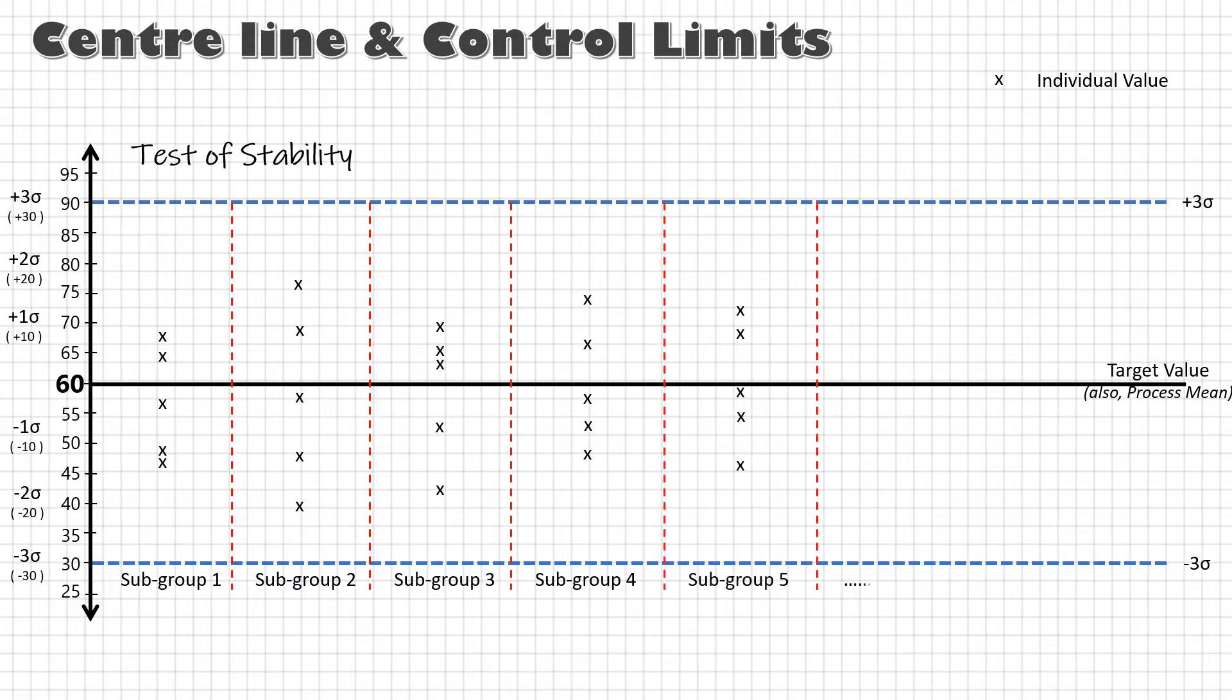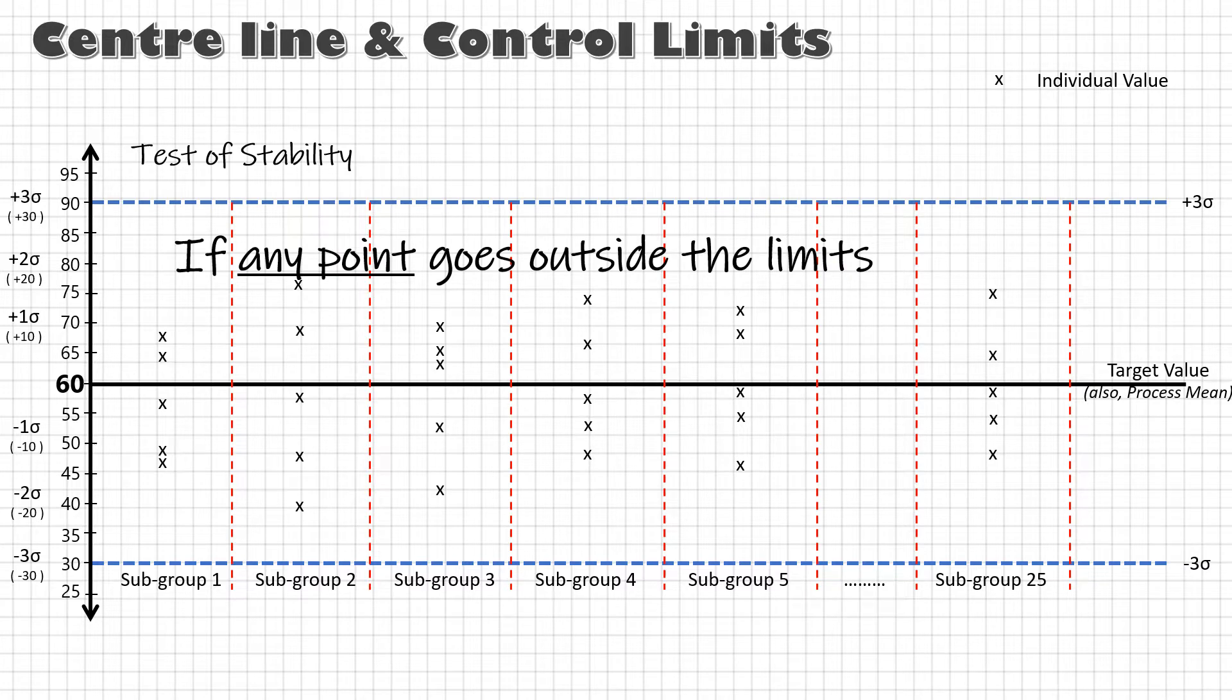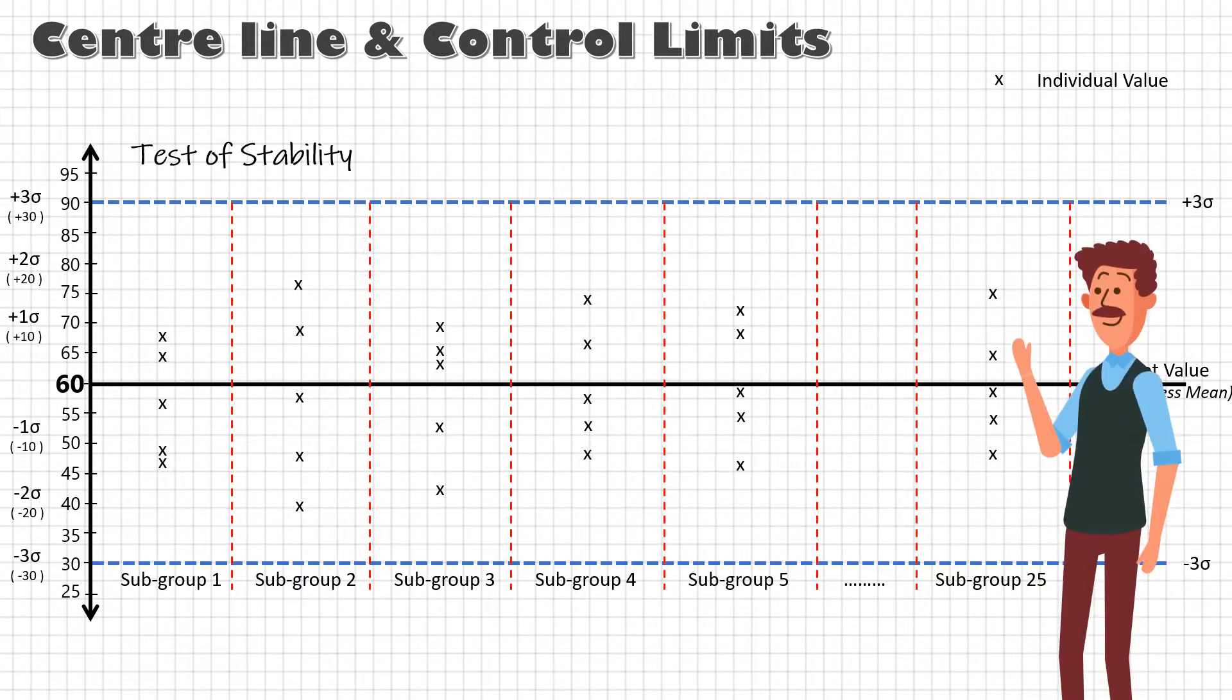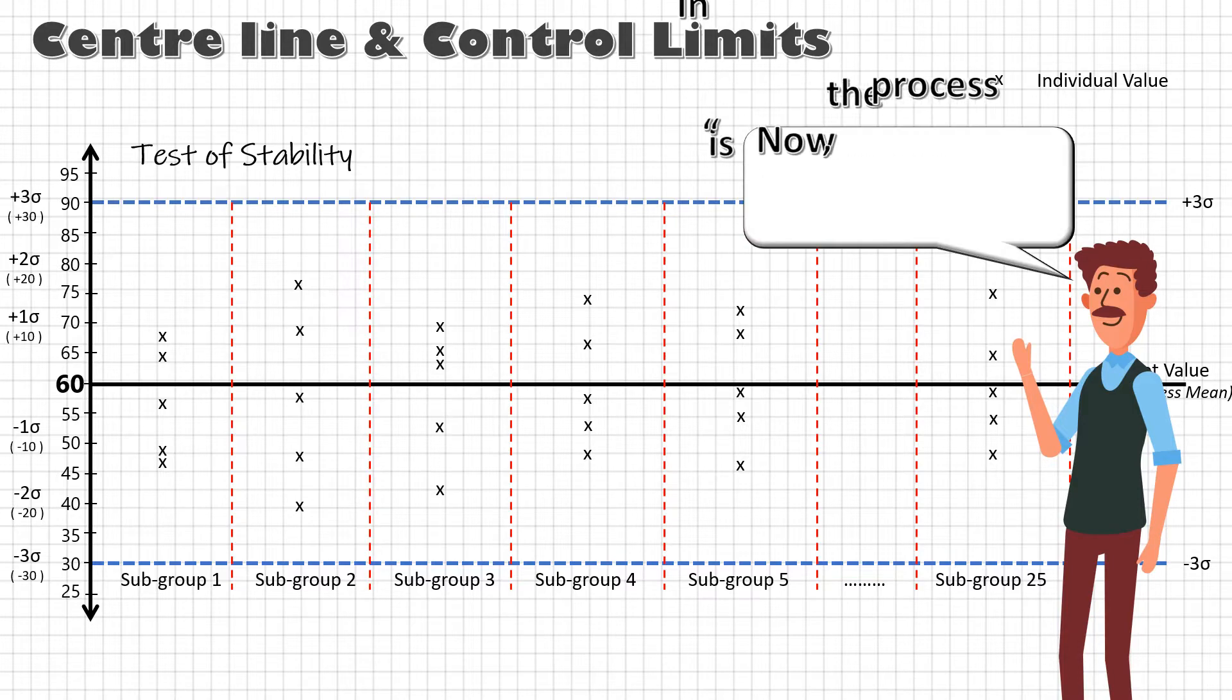If any of those 125 data points lie beyond plus minus 3 sigma there is a reason to believe that special cause is present. We must eliminate it before proceeding any further. Once the process is in control we will move to calculate the center line and control limits.